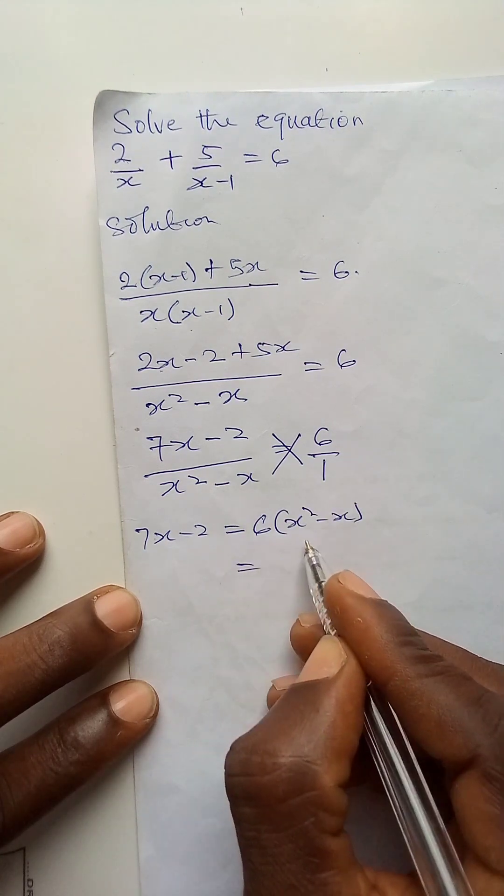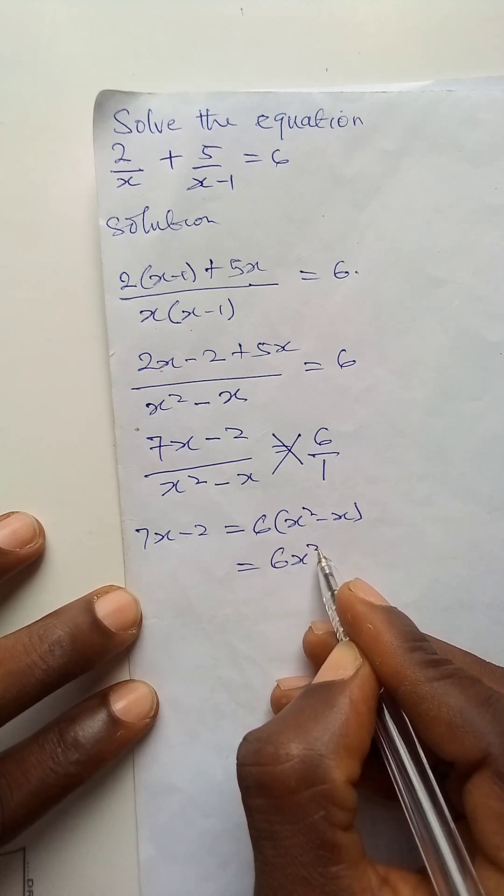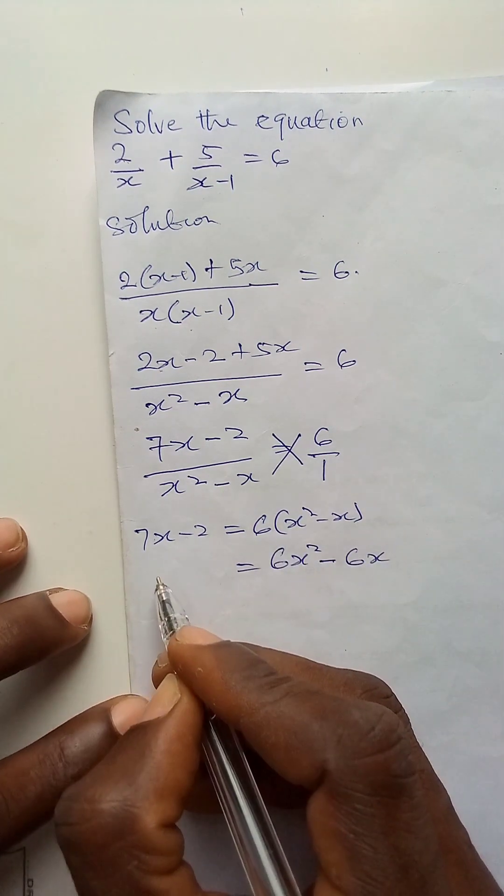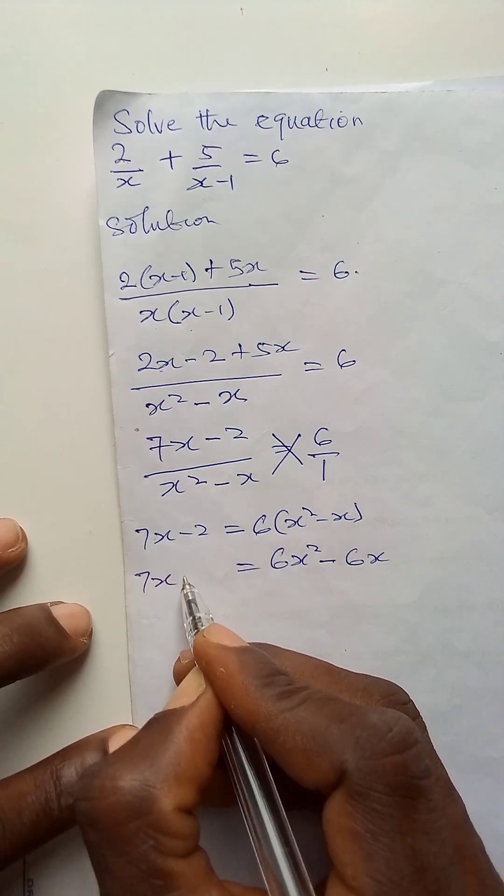Let us also open this bracket. 6 times x squared is 6x squared and 6 times minus x is minus 6x. Then it is equal to 7x minus 2.